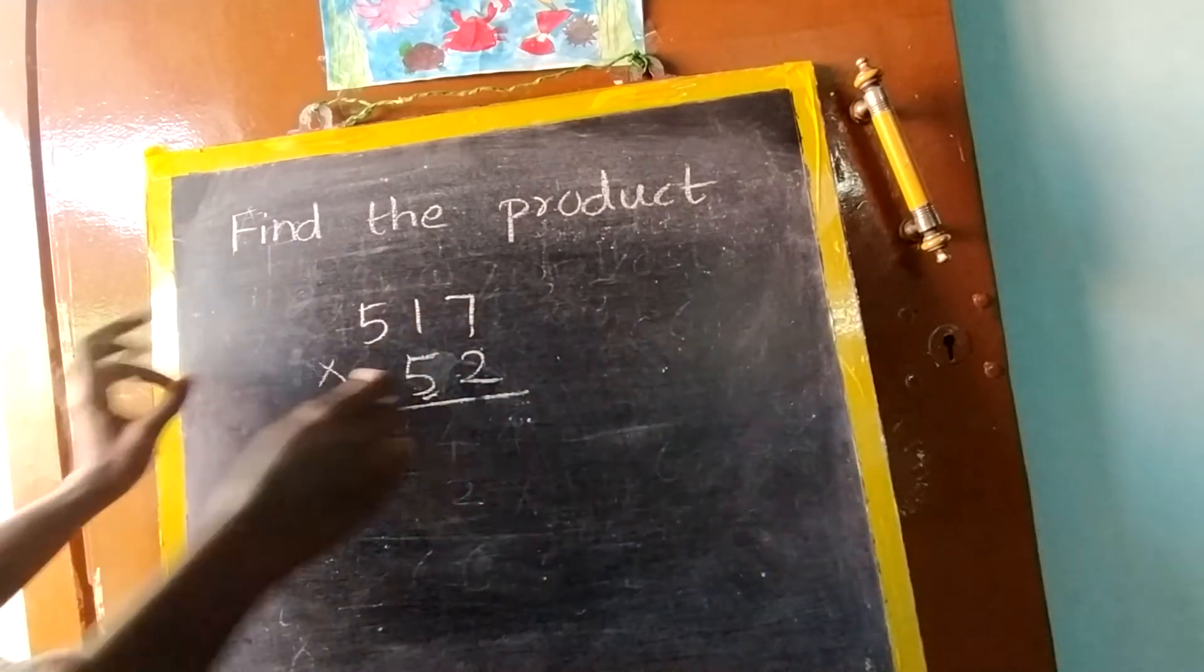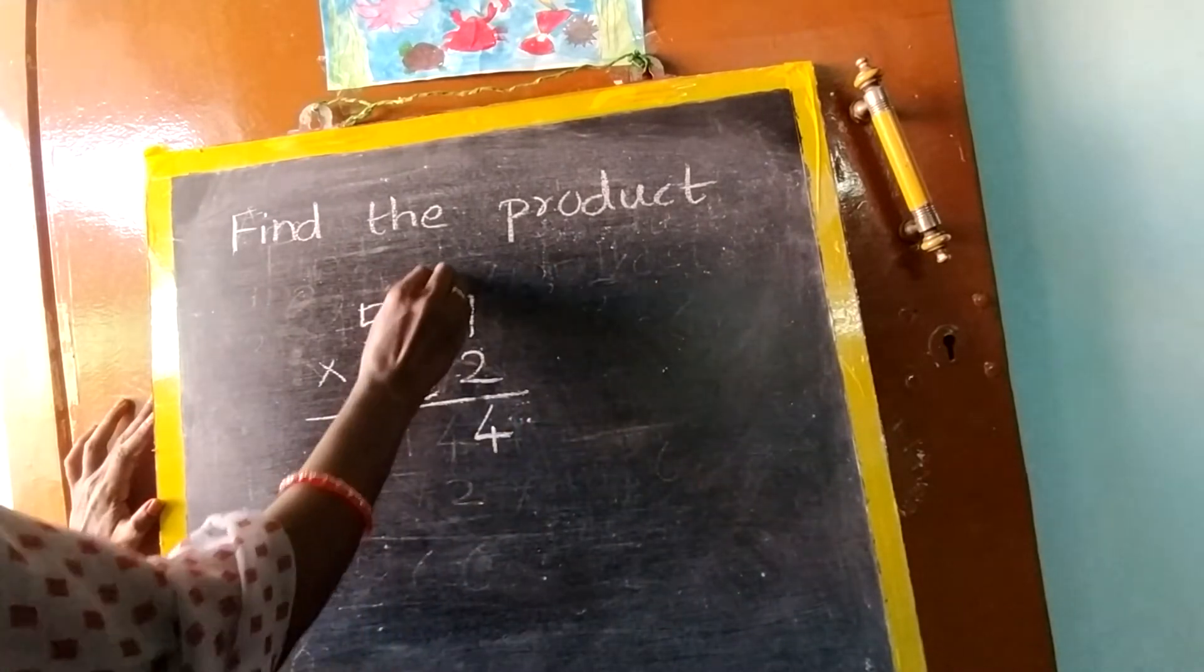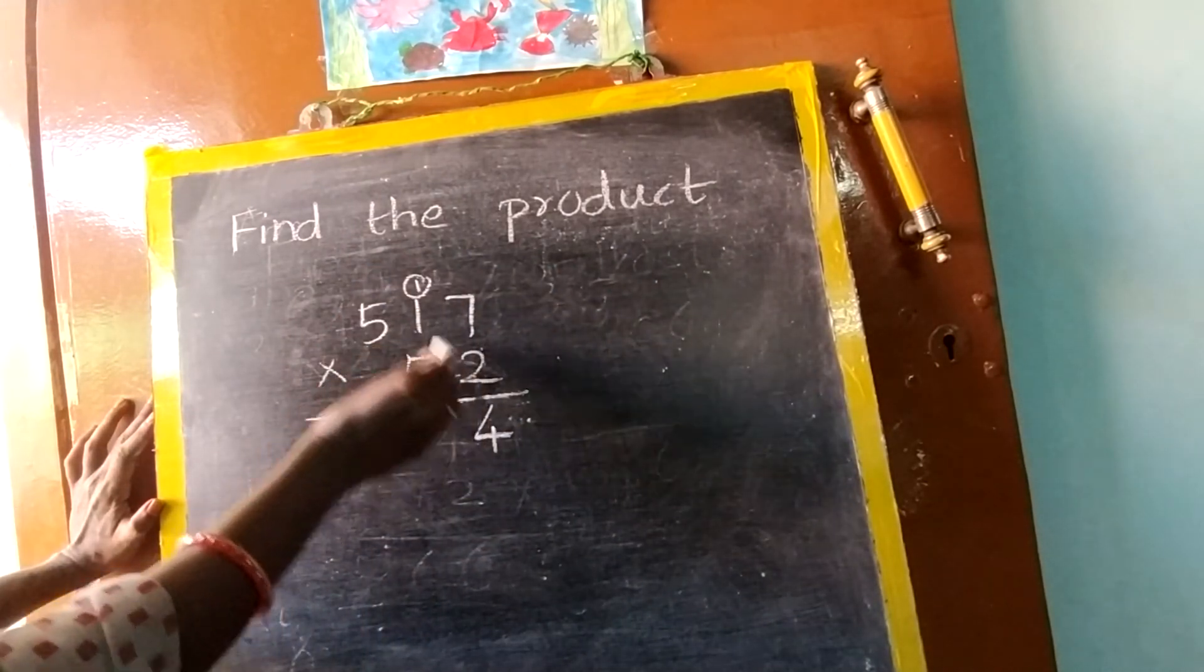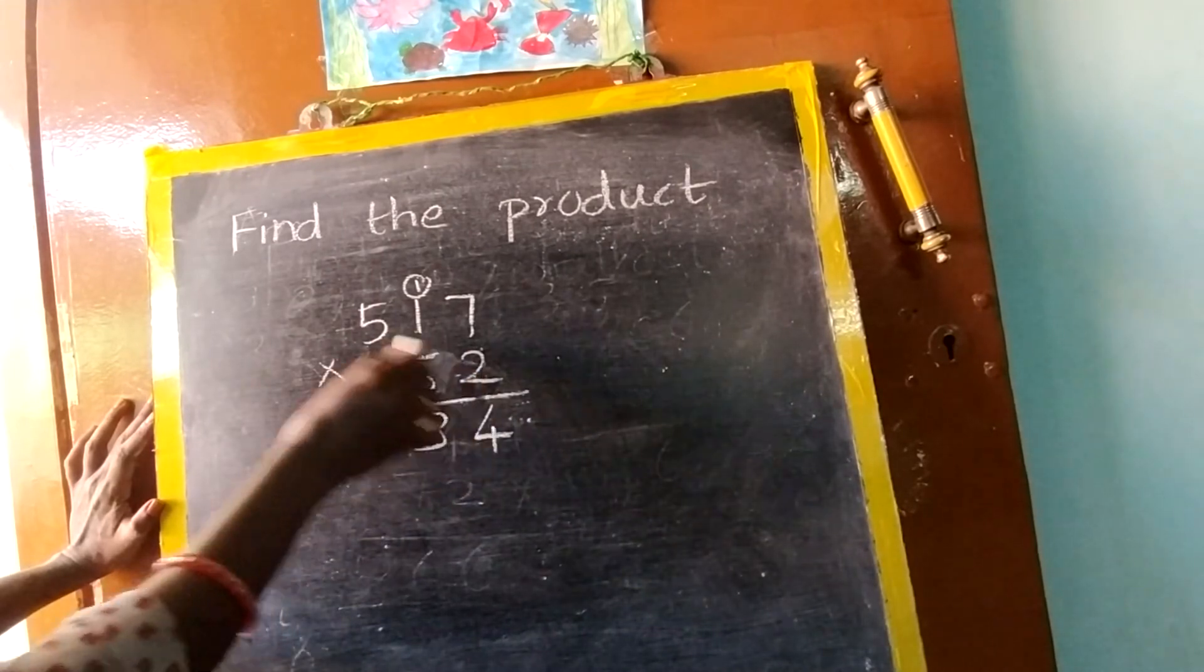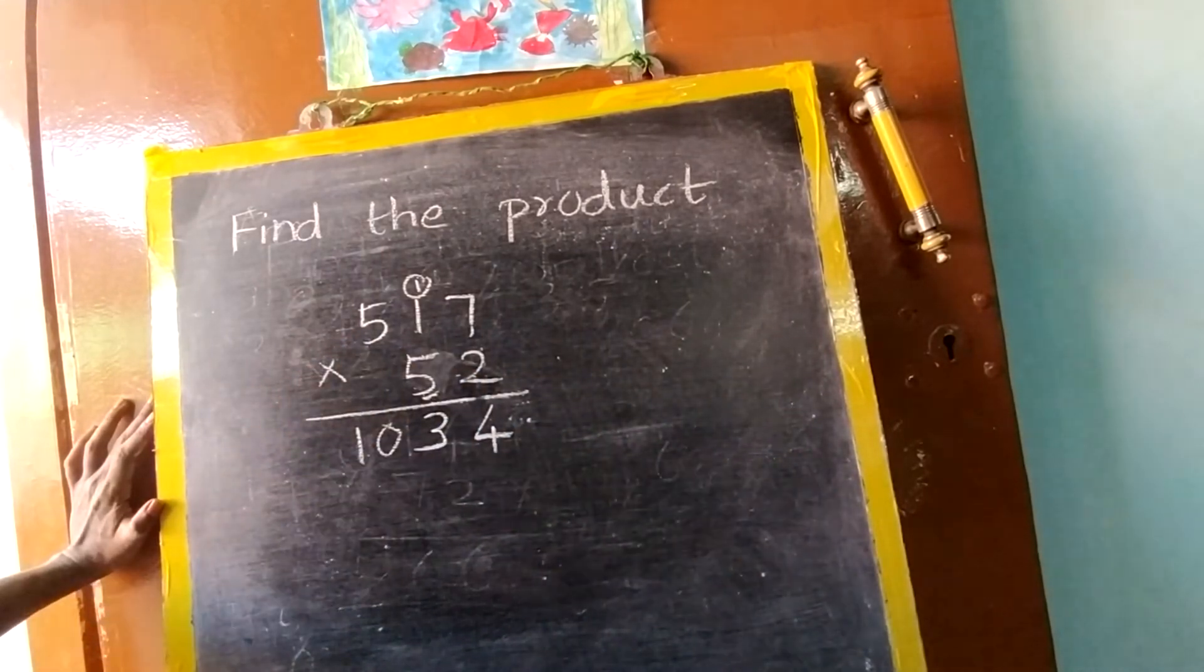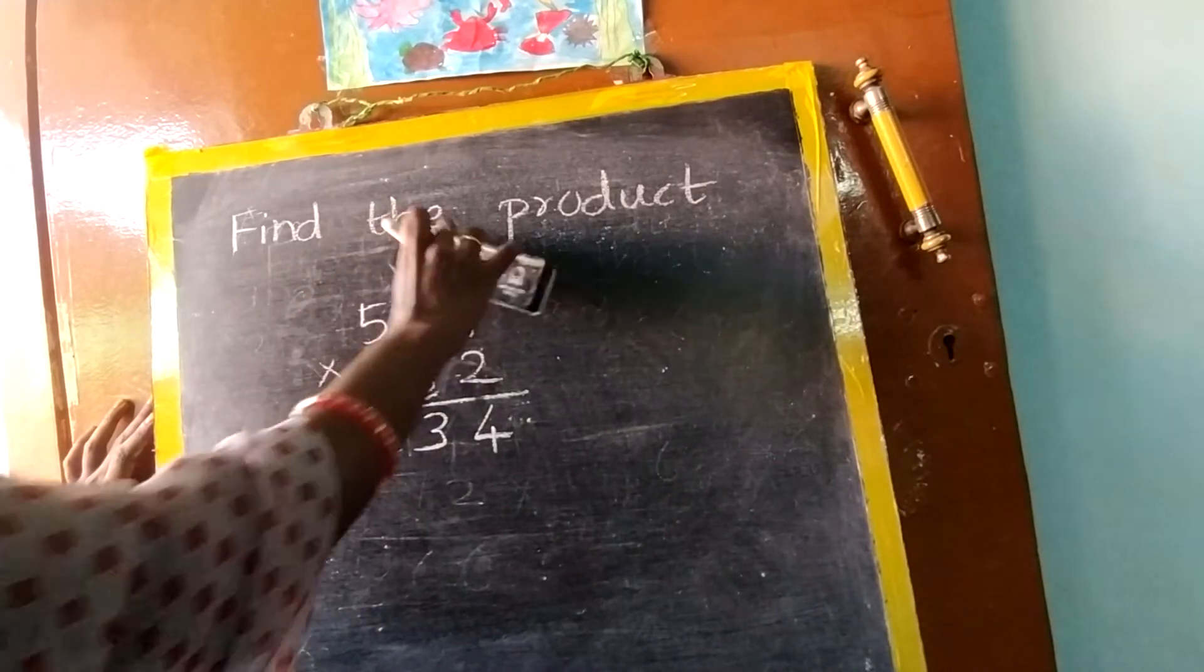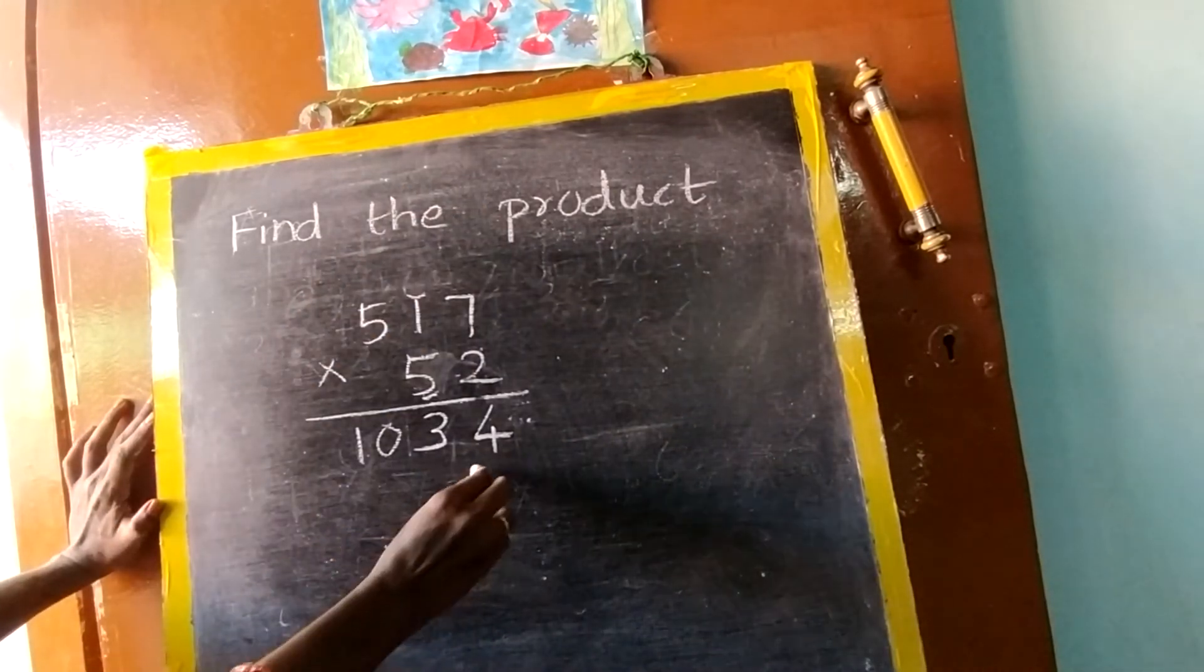2, 7's are 14. 4 here, 1 carry. Next 2 with 1. 2, 1's are 2. 2 plus 1, 3. Next 2, 5's are 10. This is over. So erase this carry over. Now put a cross.